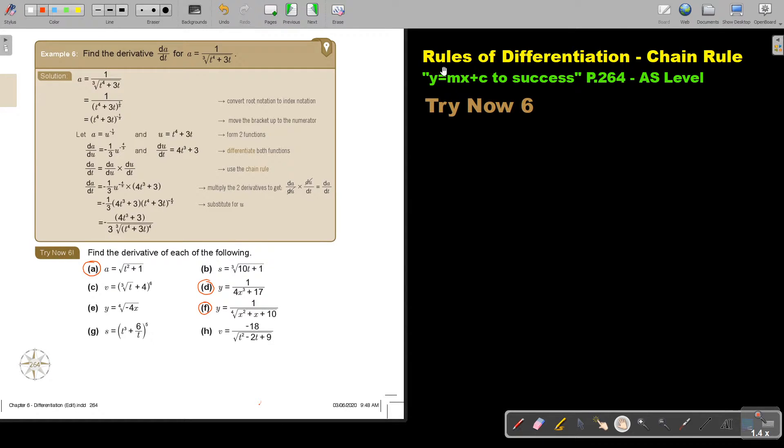In this video we are going to continue with the rules of differentiation and do the second part of the chain rule. You will find this on page 264 in the Namibia AS level mathematics textbook Y equals MX plus C to success.